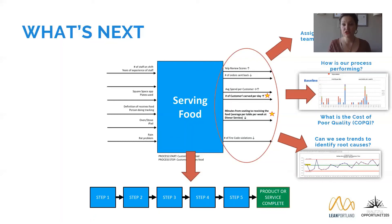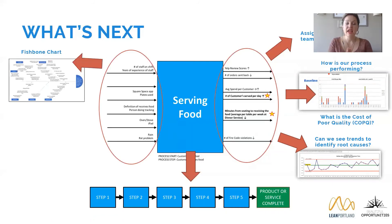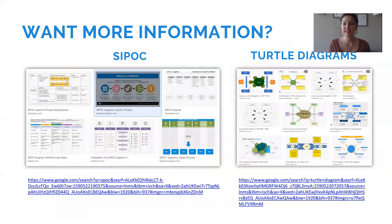You can also look at trends to identify root causes — for example, nights of the week where wait times are extremely high. Maybe there's an event venue nearby, and whenever they have an event, you know you'll need more staff. On the input side, you can take all of this and put it onto an Ishikawa fishbone chart, do deeper analysis on variables, run a spaghetti diagram to track waiter walking, and use Five Whys to get down to root causes.